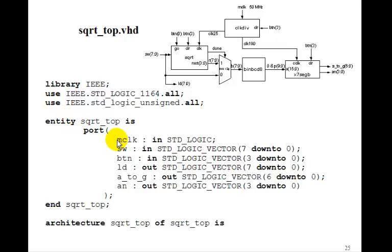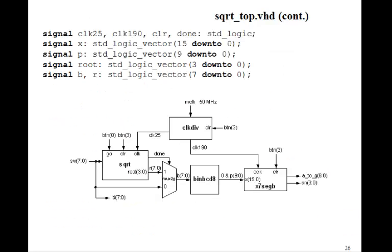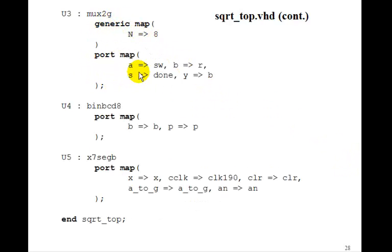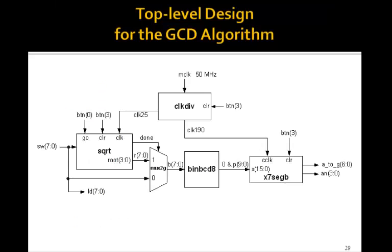So the square root top is straightforward. We've got M clock coming in, switches, buttons, LD, the usual A to G and AN. So here are the signals. We've got clock 25, clock 190. We have X, P, root, and we have the B and the P. So we will set the button 3 to clear. Here's the root, the X, the switches go to the LEDs. And we just port map clock div, port map the square root, port map the MUX2G, and binary BCD8, and the X7 seg B. So that's a straightforward top level design to implement this.